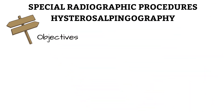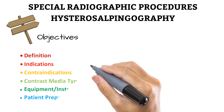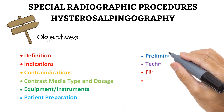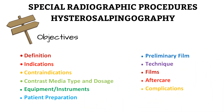We'll be starting this series by looking at hysterosalpingography. We'll be discussing it under 11 major points: defining hysterosalpingography and related anatomical and pathological terms, indications and contraindications, contrast media and equipment, patient preparation and the preliminary film, the technique and films acquired during the procedure, and finally aftercare and complications.